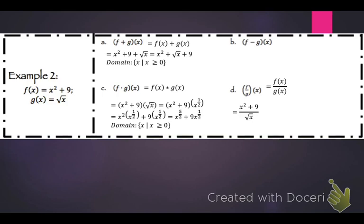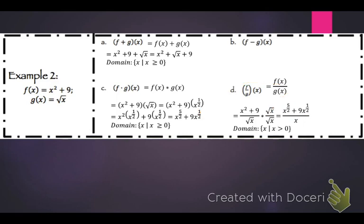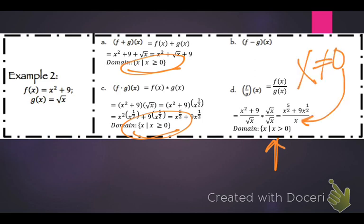For f of x over g of x, we have x squared plus 9 over the square root of x. To rationalize, multiply top and bottom by the square root of x, giving x to the 5 halves plus 9x to the 1 half over x. The domain is x such that x is greater than 0, because x cannot equal 0 since it is in the denominator.